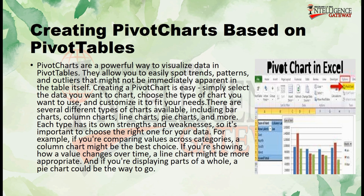There are several different types of charts available, including bar charts, column charts, line charts, pie charts, and more. Each type has its own strengths and weaknesses, so it's important to choose the right one for your data. For example, if you're comparing values across categories, a column chart might be the best choice. If you're showing how a value changes over time, a line chart might be more appropriate. And if you're displaying parts of a whole, a pie chart could be the way to go.